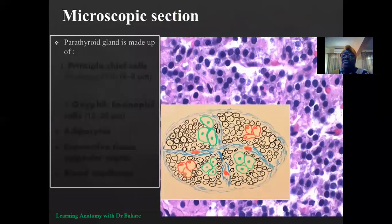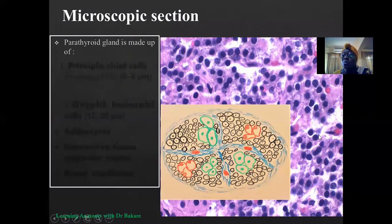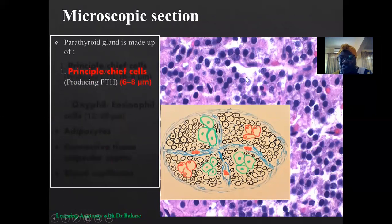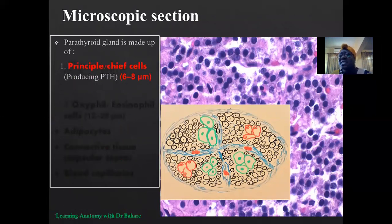Going to the microscopic features of the parathyroid gland: if a section of the parathyroid gland is processed into a histological section and viewed under the microscope, this is what we will see. I've tried to create a handmade diagram to relate what is presented on the histological section with the handmade section. If you look at the entire presentation, we see that we have different types of cells distributed within this section.